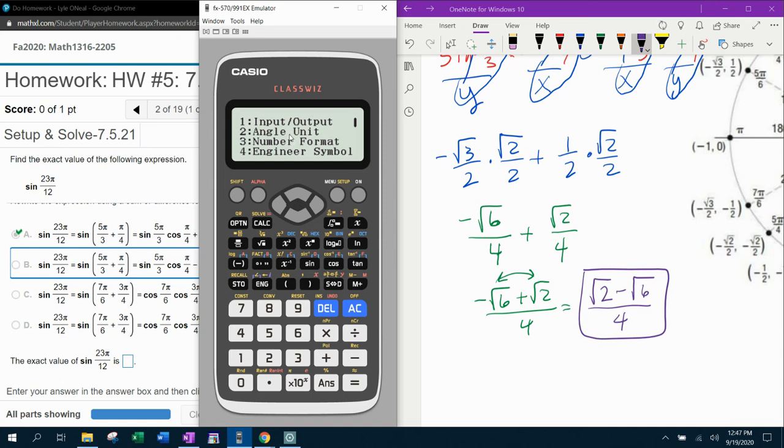So the first thing I'm going to have to do is put my calculator in radian mode. And then I'm going to type in this original problem, which is sine of 23π over 12.